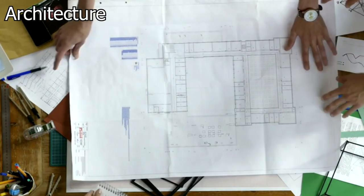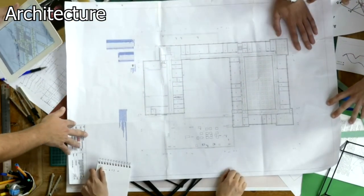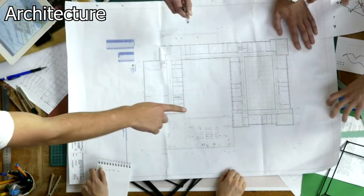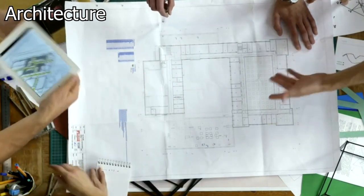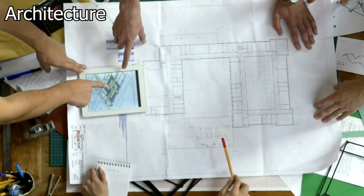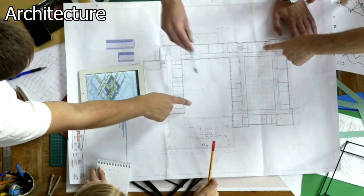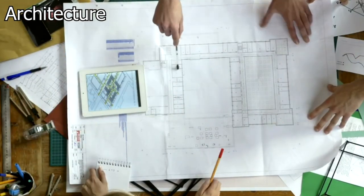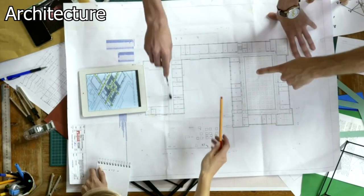Architecture. Architecture degrees are difficult due to the combination of technical skills, such as drafting and building codes with creativity and artistic ability. Architecture students must also have a deep understanding of materials and construction methods, as well as the ability to work on large-scale projects.